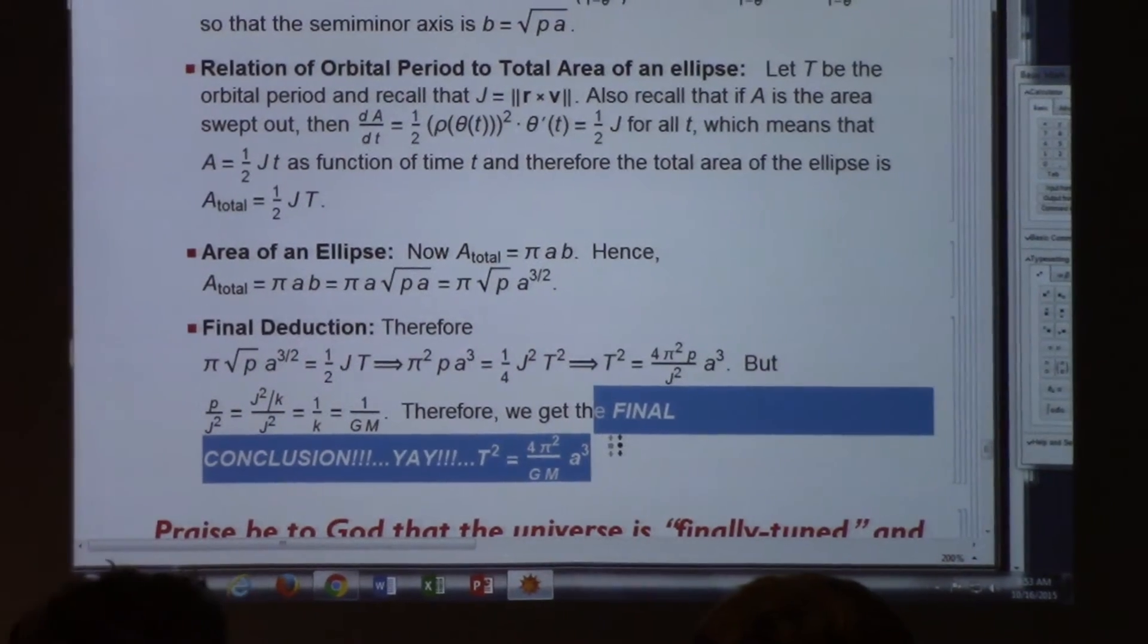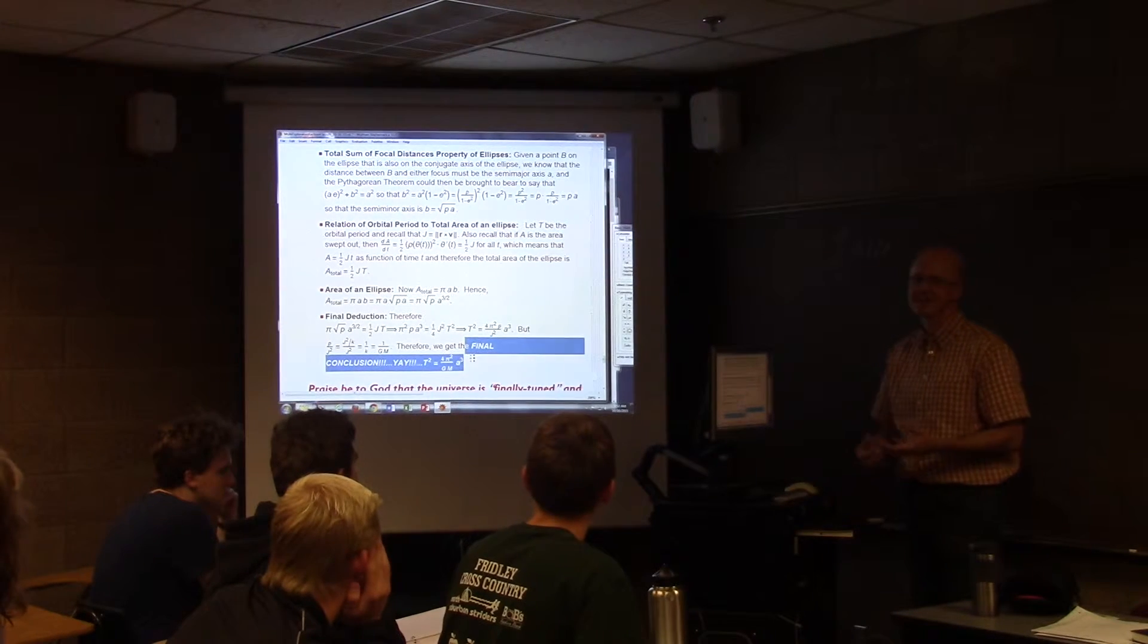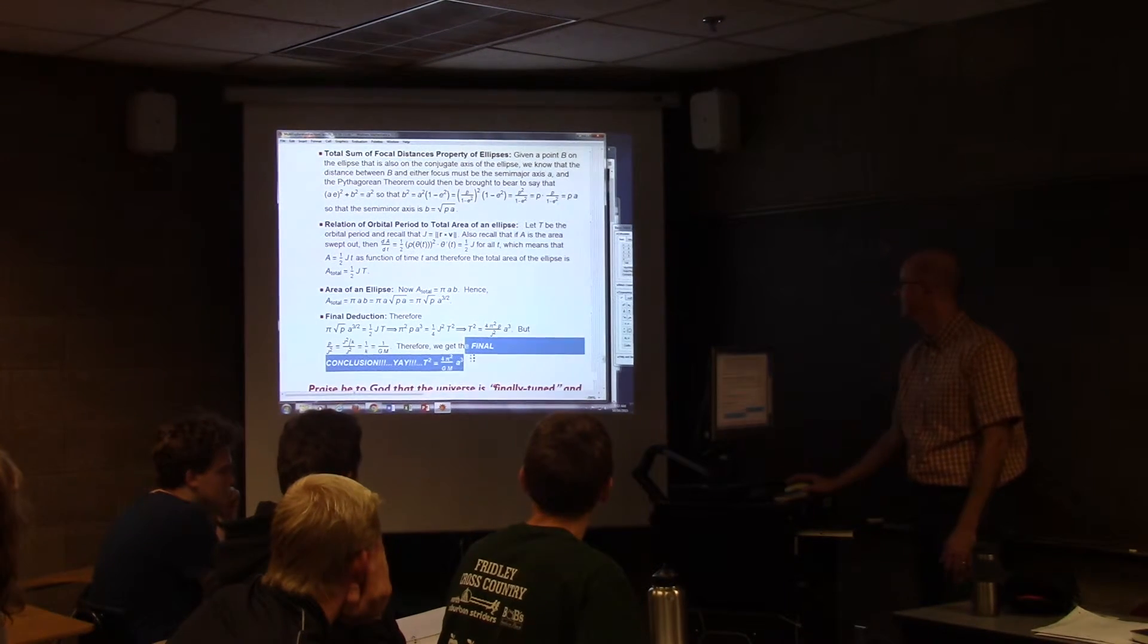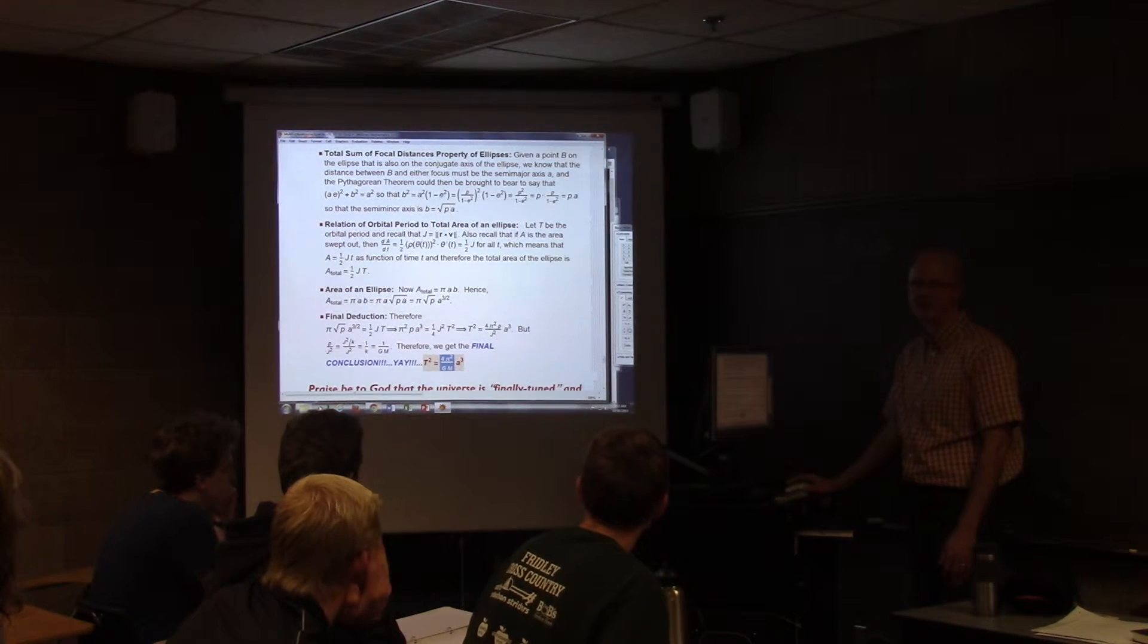So very quickly, it's a bunch of algebra manipulations, defining new quantities, substitutions, etc., and manipulations to get the final conclusions with the constant being 4 pi squared over g times m.